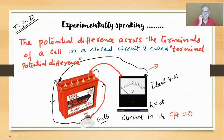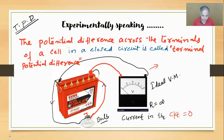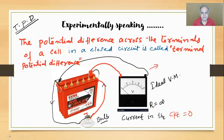Now a new word: terminal potential difference, or TPD. Once again we are giving the experimental definition only. The potential difference across the terminals of a cell in a closed circuit is called terminal potential difference.